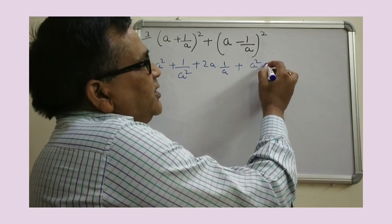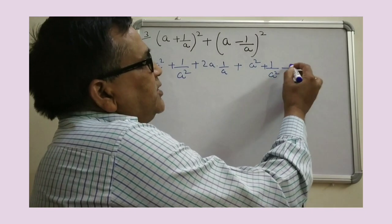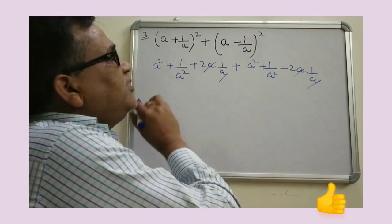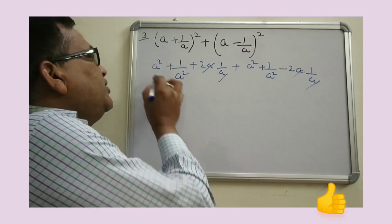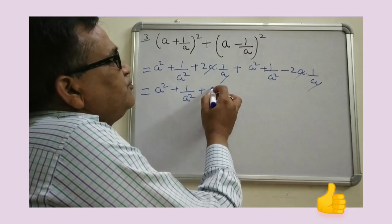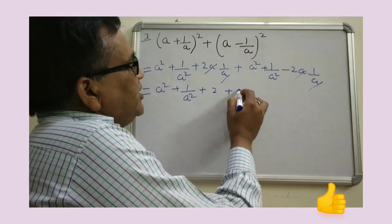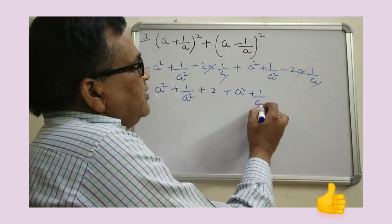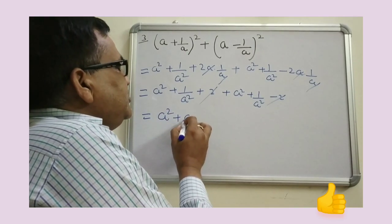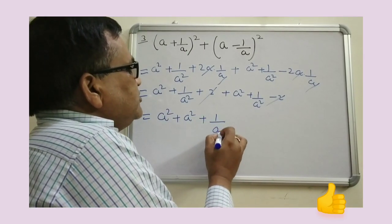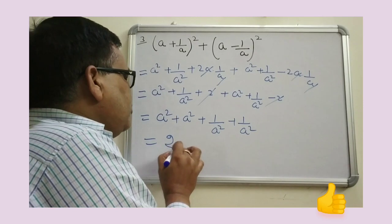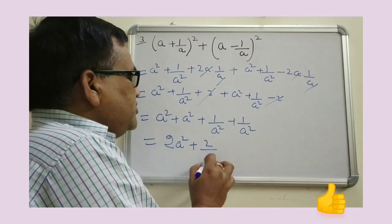The next part gives a squared plus 1 upon a squared minus 2 into a into 1 upon a. The 2a times 1/a terms cancel out. Adding both parts: a squared plus 1 upon a squared plus 2 plus a squared plus 1 upon a squared minus 2, the plus 2 and minus 2 cancel out. After solving we get 2a squared plus 2 upon a squared. This is the final answer.